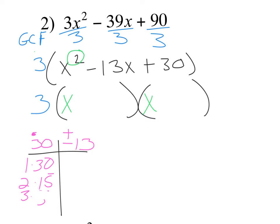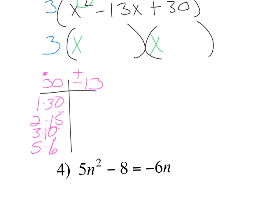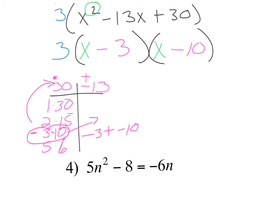There's also three and ten. Do any of those add up to 13? Yes — three and ten. So what they're really going to be is negative three and negative 10, because a negative times a negative still gives you positive 30, but negative 3 plus negative 10 adds up to negative 13. Since a equals one, you just pop them into the binomials: x minus 3 and x minus 10.